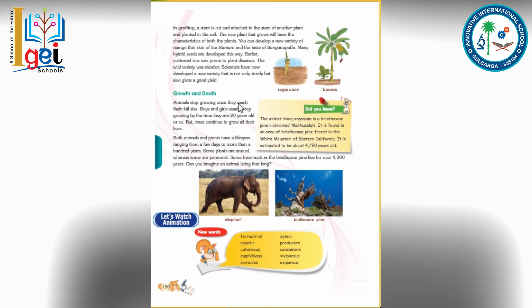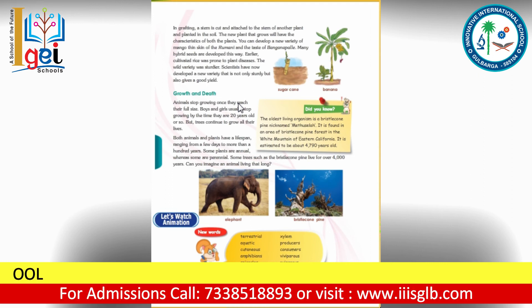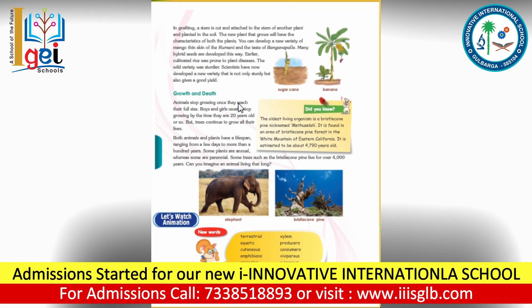Next, let's talk about growth and death. Animals stop growing once they reach their full size. After a period of time, mostly all living things die — animals, human beings, and plants all have a limitation period. Mostly animals grow by the time they are 20 years old, but trees continue to grow throughout their lives.